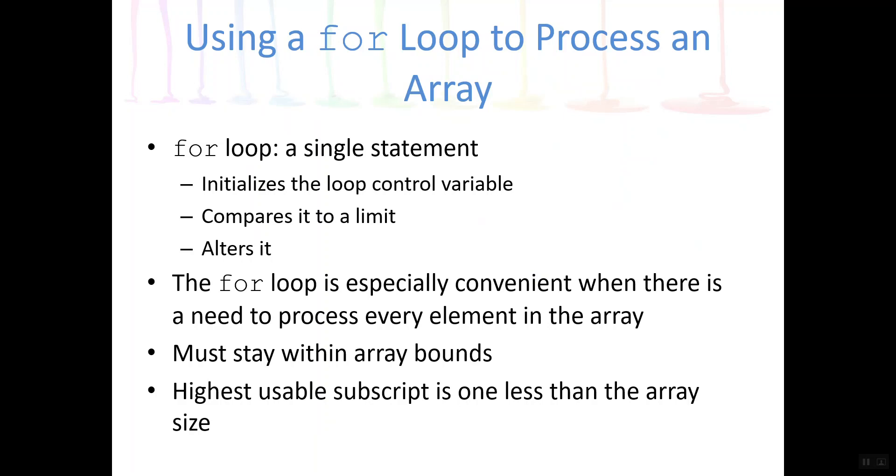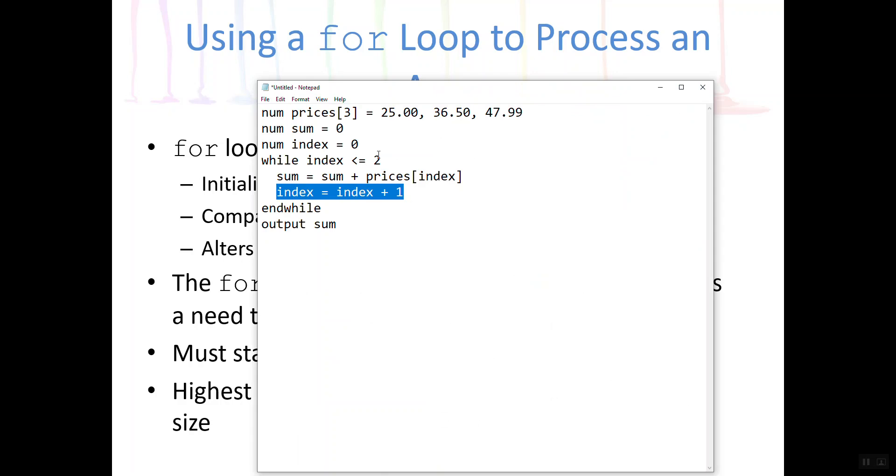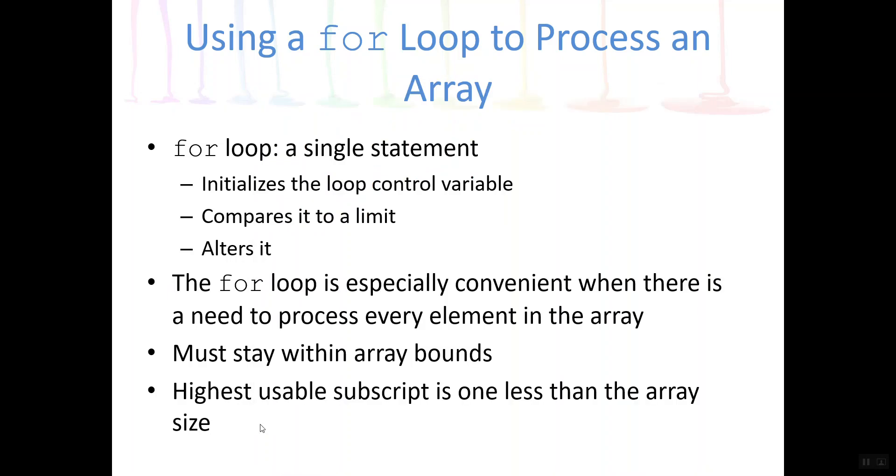You must stay within array bounds. What that means is going back to my example here. If I had accidentally written either in the for loop or here in my while loop, while index is less than or equal to three, that would be a common error to make because we often forget the indexing does not start at one where we would say one, two, three. It starts at zero. So this would be a common error to make, but it would cause a runtime error when the program runs. It would say array out of bounds index exceptions. That's the specific error that .NET Visual Basic would give you. So we have to be cognizant of that, whether you're using a while loop or a for loop, that you must stay within array bounds. Always remember the highest usable subscript is one less than the array size.